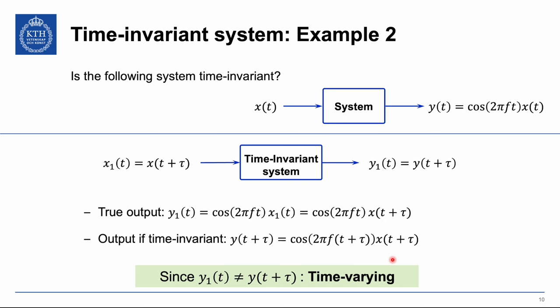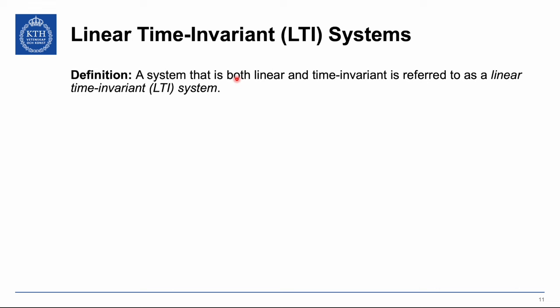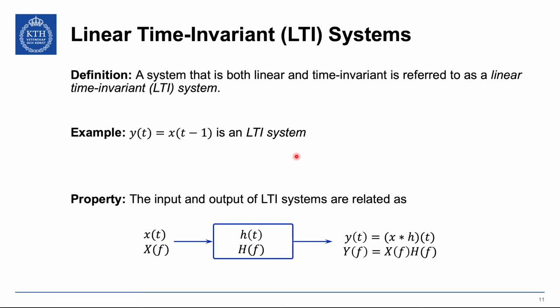A system that is both linear and time invariant is referred to as a linear time invariant, or LTI, system. An example is y of t equal to x of t minus 1, which is an LTI system as we have seen. LTI systems have many useful properties used when analyzing communication systems. One is that the output is the input x of t convolved with the impulse response h of t. Another is that in the Fourier domain, taking the Fourier transform of the input and multiplying it by the frequency response H of f gives the Fourier transform of the output. These two relationships will be utilized a lot later in this course.